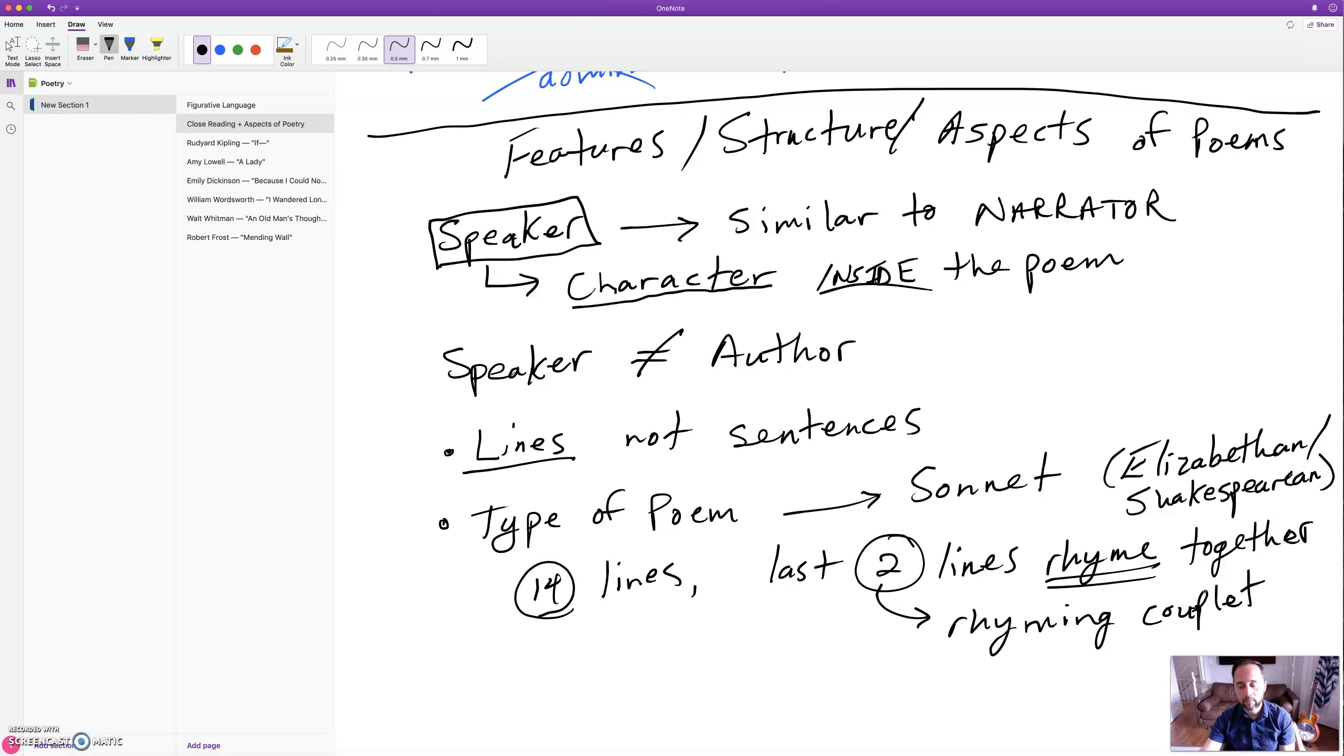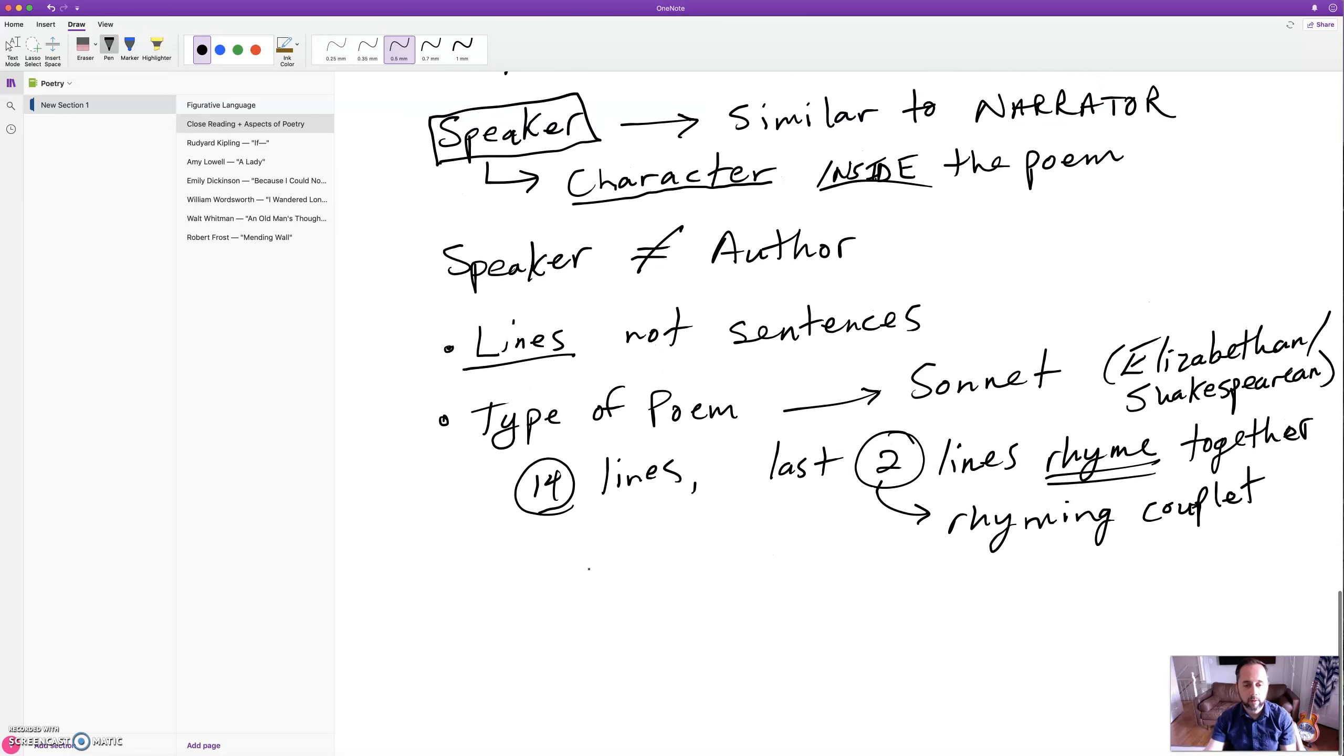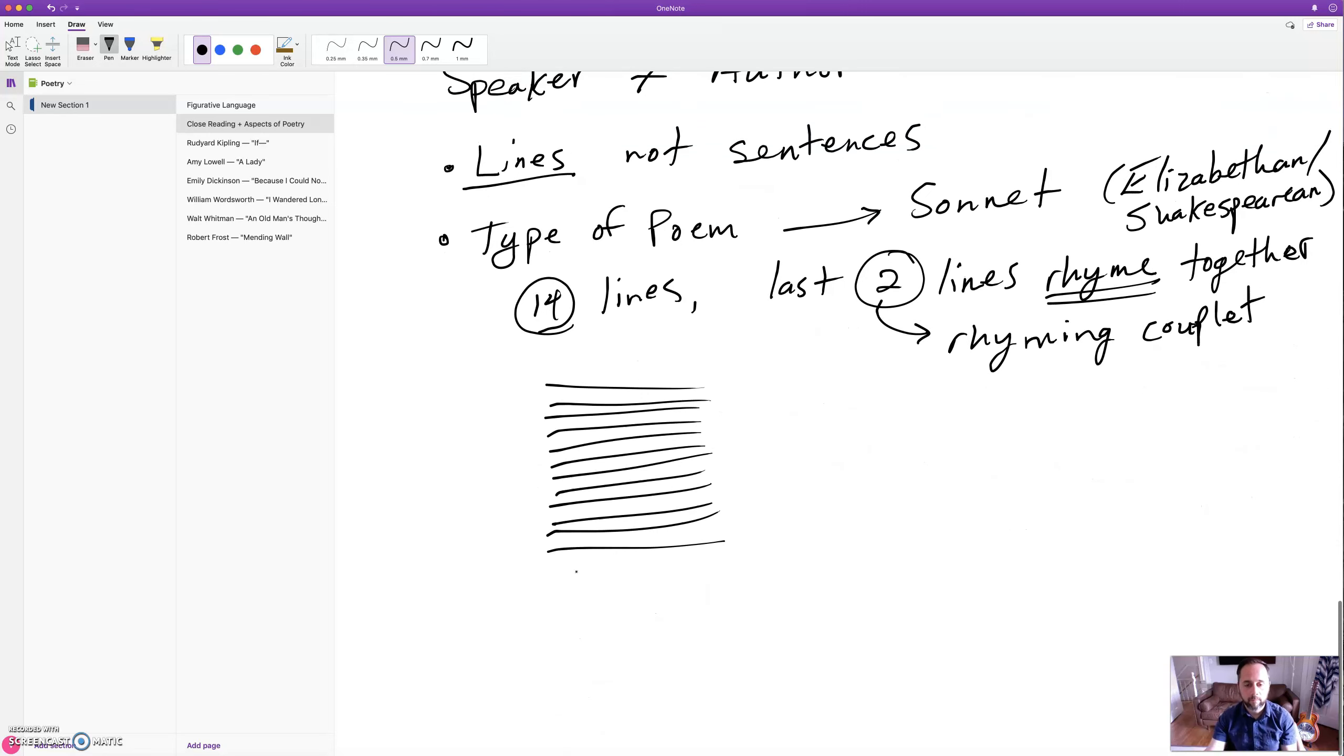A sonnet has to have this very strict structure. We can get into different rhyme schemes and patterns. There are rhyme patterns and we call those schemes. A scheme is a pattern. In this case, in this 14 line poem, if it's an Elizabethan sonnet, it's got to go A, B, A, B, C, D, C, D, E, F, E, F, and then the last two lines are G, G.